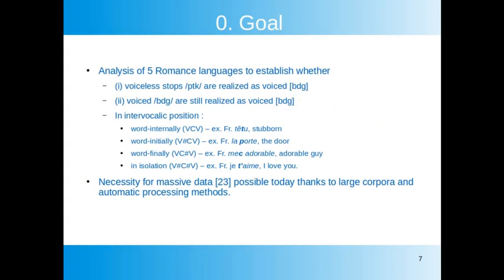In the present study we analyze five Romance languages to establish whether voiceless stops are realized as voiced and whether voiced stops are still realized as voiced in intervocalic position — word-internally (VCV), word-initially (VCV), word-finally (VCV), and in isolation, namely one-consonant words labeled as monophones (VCV). Investigating such a subtle ongoing phenomenon requires analyzing massive data to spot the alternations reliably, and such research is made possible today thanks to large corpora and automatic processing methods.